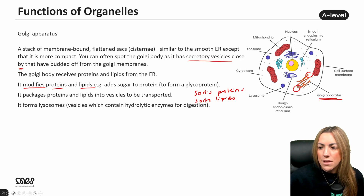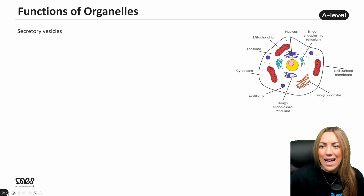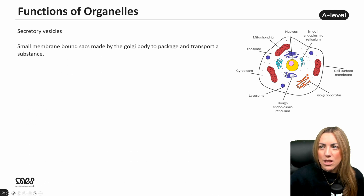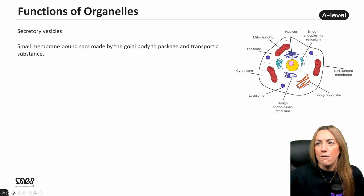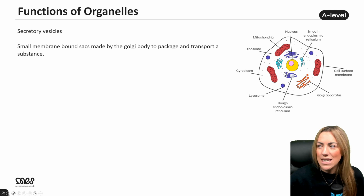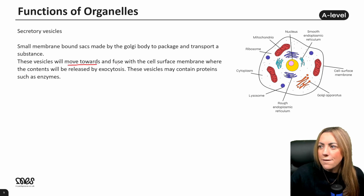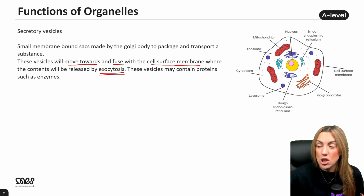The Golgi body also forms lysosomes — a particular type of vesicle containing hydrolytic enzymes. If the Golgi body packages digestive enzymes into one of these vesicles, we call that vesicle a lysosome. Secretory vesicles bud off from the Golgi body — they are small membrane-bound sacs that package and transport substances such as enzymes. These vesicles move towards and fuse with the cell surface membrane, and the contents are released by exocytosis, which is a type of bulk transport requiring ATP.